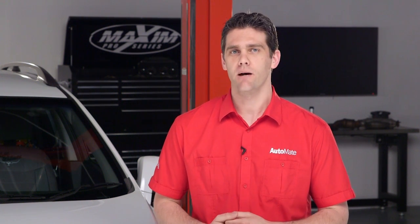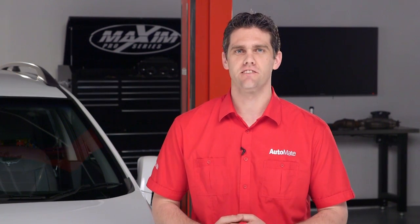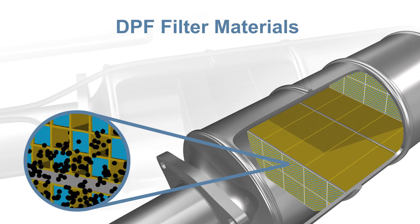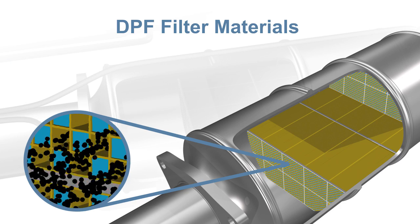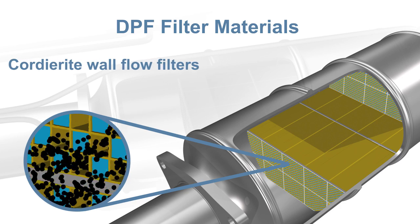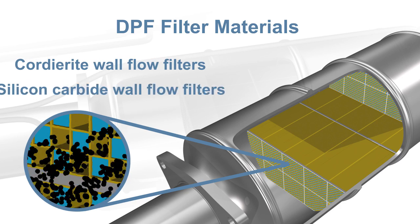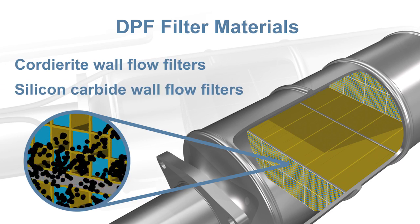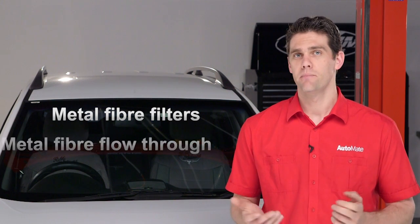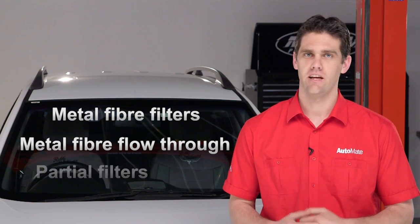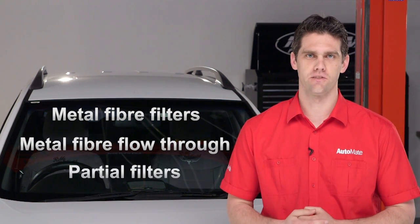Diesel particulate filter materials come in many variants. The most common materials used within a DPF are cordierite wall flow filters or silicon carbide wall flow filters. Other materials can include metal fibre filters, metal fibre flow-through filters, and partial filters.